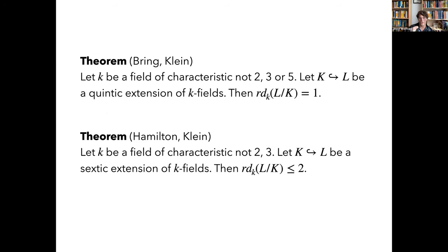Hamilton did investigations in this area in the 1830s. Klein brought in new methods to extend Hamilton's work but ran up against the same bounds. Their results showed that any degree six extension has resolvent degree at most two — they wrote down a two-variable formula solving the general sextic.